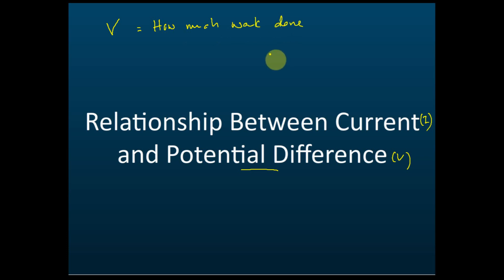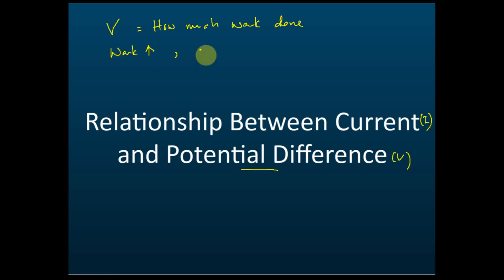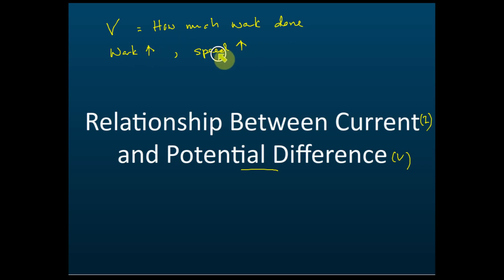V, potential difference, is how much work is done to move one coulomb of charge. The higher the work done, the faster the charge moves. Potential difference is essentially how much work is done.